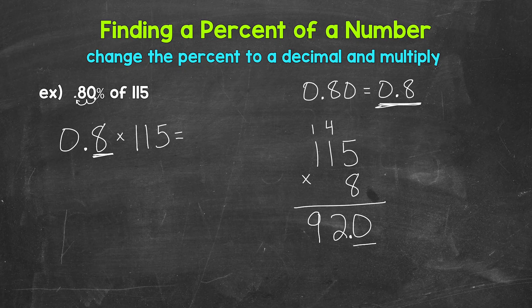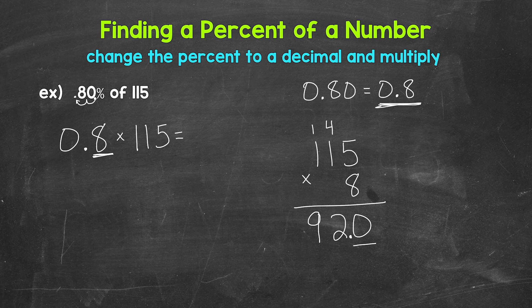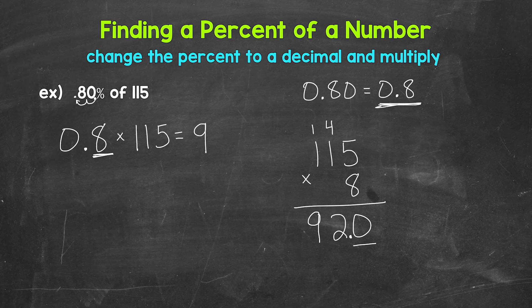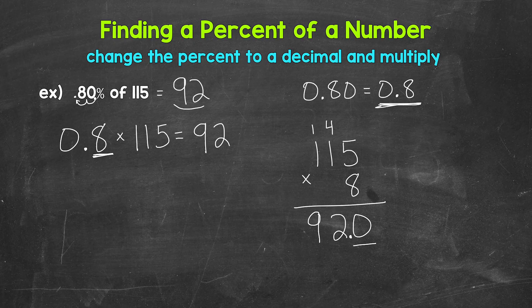That gives us 92.0. That zero to the right of the decimal doesn't change the value of anything. We have 92 either way. So we can leave that zero off. Eight-tenths times 115 equals 92. So that means 80% of 115 is 92.